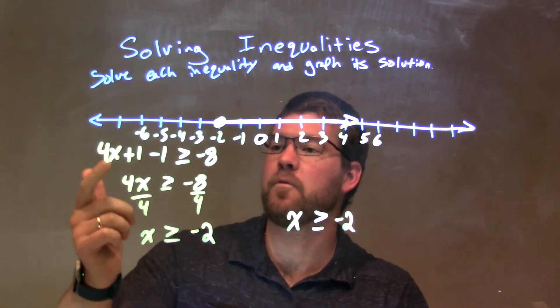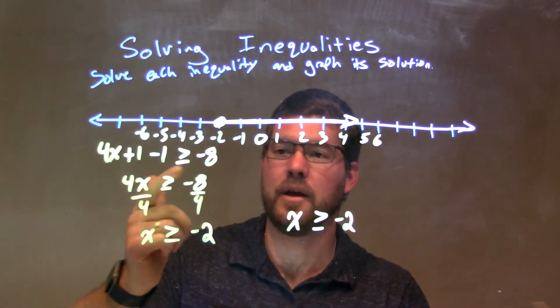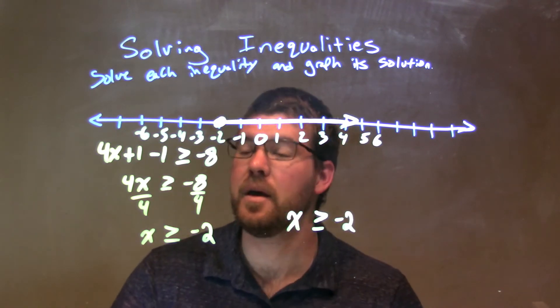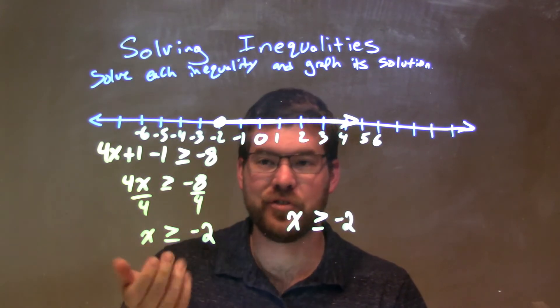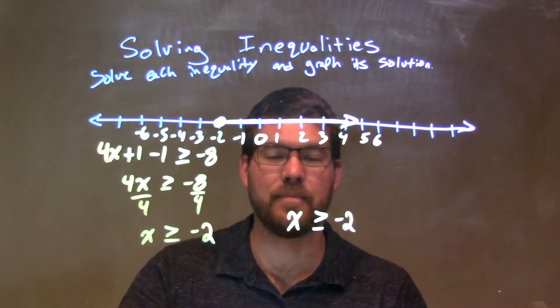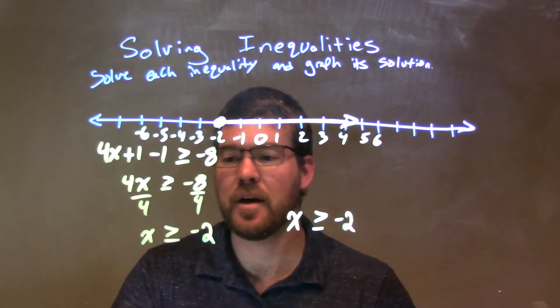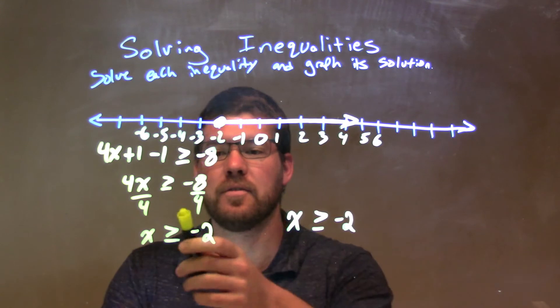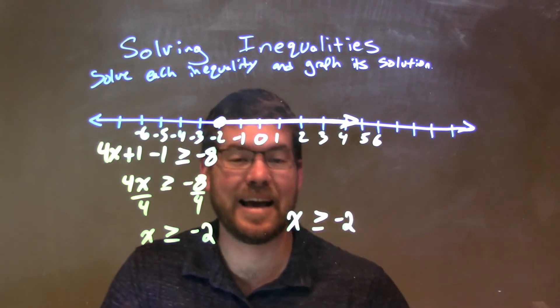So let's do a quick recap. We have 4x plus 1 minus 1 is greater than or equal to negative 8. Well, 1 minus 1 is 0. Then we have the 4x is greater than or equal to negative 8 divided by 4 to both sides. And I was left now with x is greater than or equal to just the negative 2.